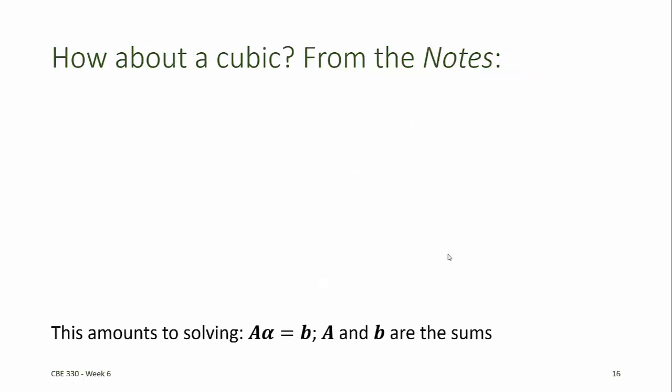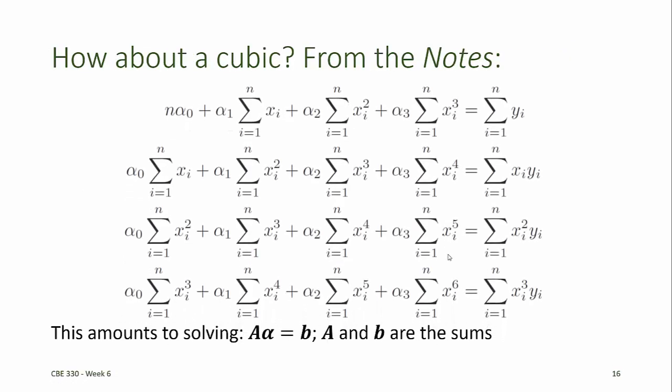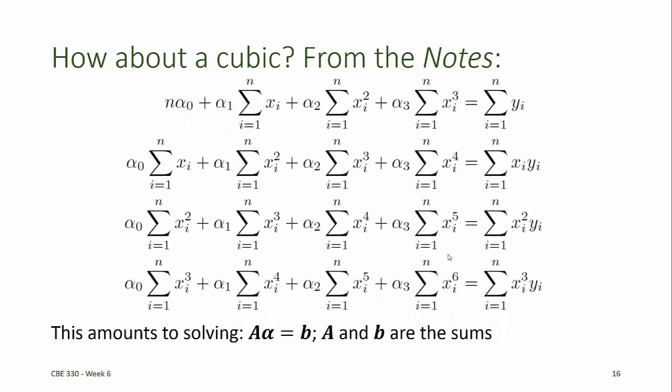For a cubic equation, we use the same approach, and we end up with four equations for the four unknowns: alpha 0, alpha 1, alpha 2, and alpha 3. You can see that the same pattern will hold as we go to higher order polynomials.